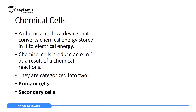Among the three main sources — chemical cells, solar cells, and generators — we are going to discuss chemical cells in this topic. A chemical cell is a device that converts chemical energy stored in it to electrical energy. A chemical process or reaction takes place to produce electrons. When these electrons move they cause current, and current is the rate of flow of charges. So chemical cells produce EMF as a result of a chemical reaction.